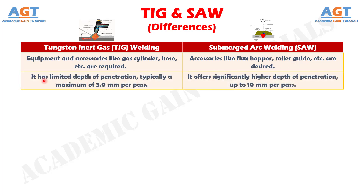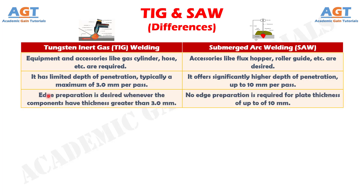Number 13: TIG welding has limited depth of penetration, typically a maximum of 3.0 mm per pass, whereas submerged arc welding offers significantly higher depth of penetration, up to 10 mm per pass. Number 14: in TIG welding, edge preparation is desired whenever the components have thickness greater than 3.0 mm, whereas no edge preparation is required for plate thickness of up to 10 mm in submerged arc welding.